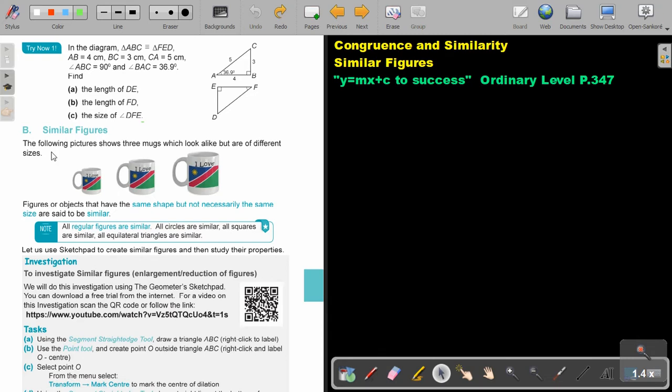Similar figures. The following pictures show three mugs which look alike but are of different sizes. Figures or objects that have the same shape but not necessarily the same size are said to be similar. All regular figures are similar. All circles are similar. All squares are similar. All equilateral triangles are similar.